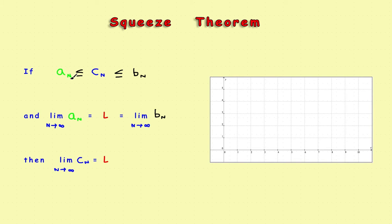The definition says you've got three sequences: an A sequence less than a C sequence less than a B sequence. If you find the limit of the first and last sequences is equal to some number L, then you can show the limit of the sequence you're interested in is also L. Let's do this graphically to give you an idea of what it looks like.